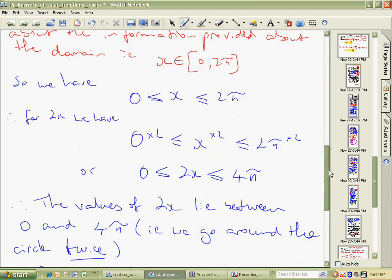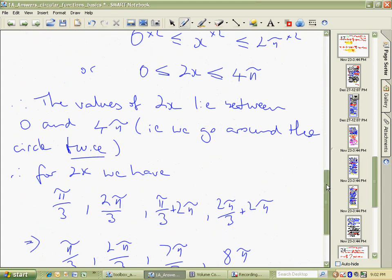Now that matters, because if we consider the 2x actually ranges between 0 and 4π, that means we go around the circle twice. So here we are here, and we're looking at an angle here and here.